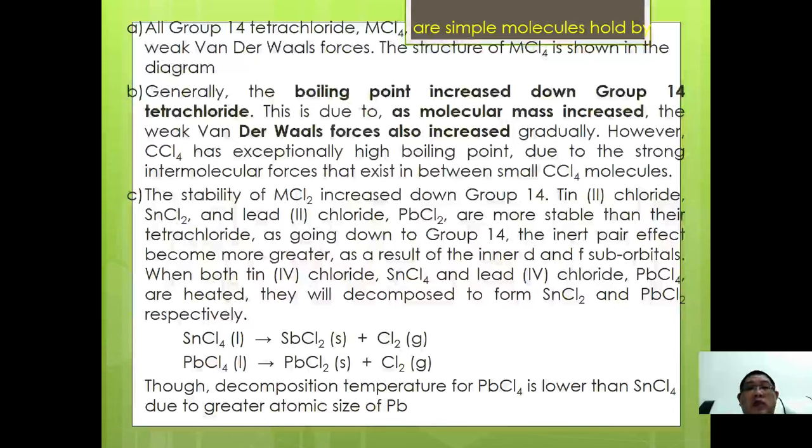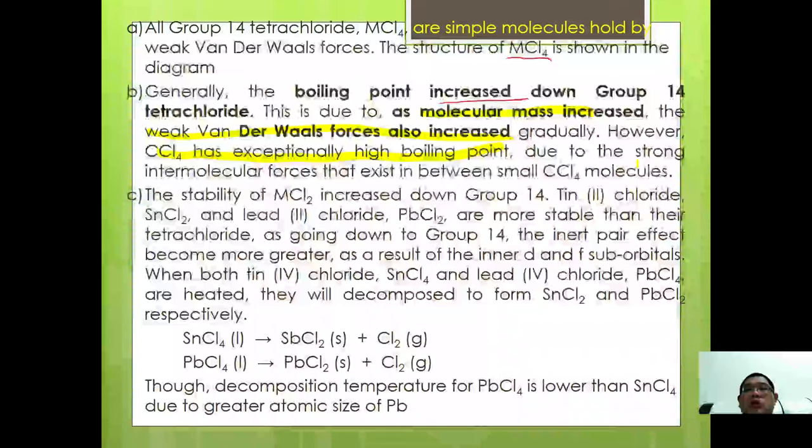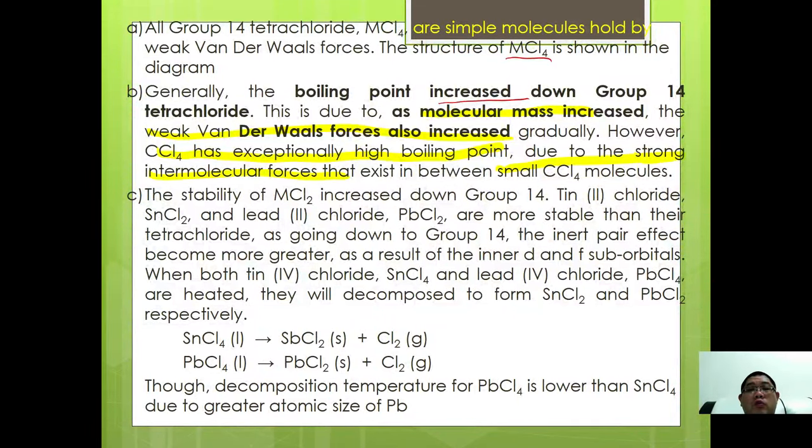All Group 14 tetrachlorides are simple covalent molecules held by weak Van der Waals forces. Generally, boiling point increases down Group 14 tetrachlorides due to increasing molecular mass, which strengthens Van der Waals forces. However, CCl4 has exceptionally high boiling point due to the strong intermolecular forces that exist between small CCl4 molecules.